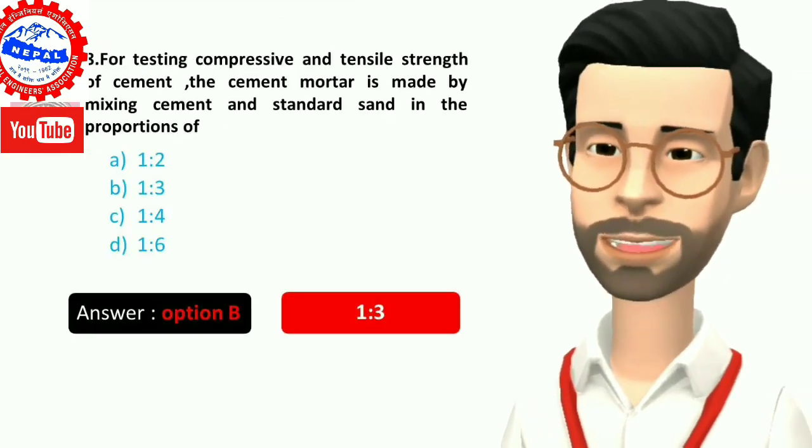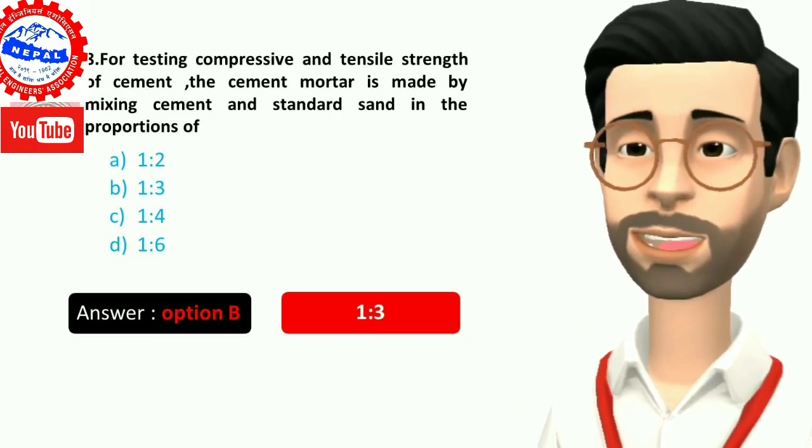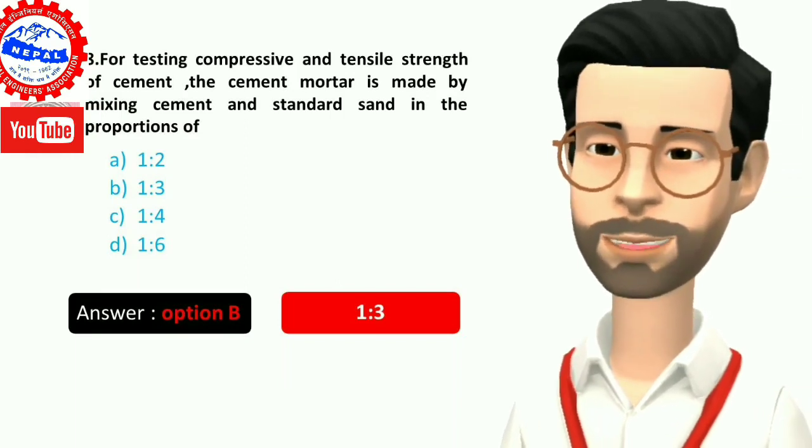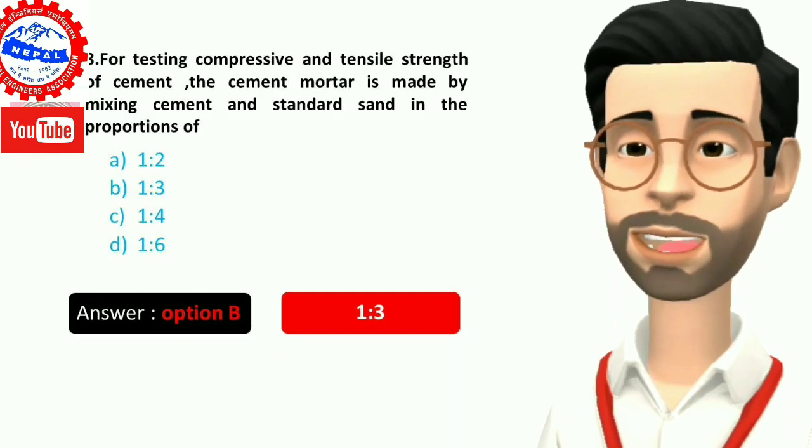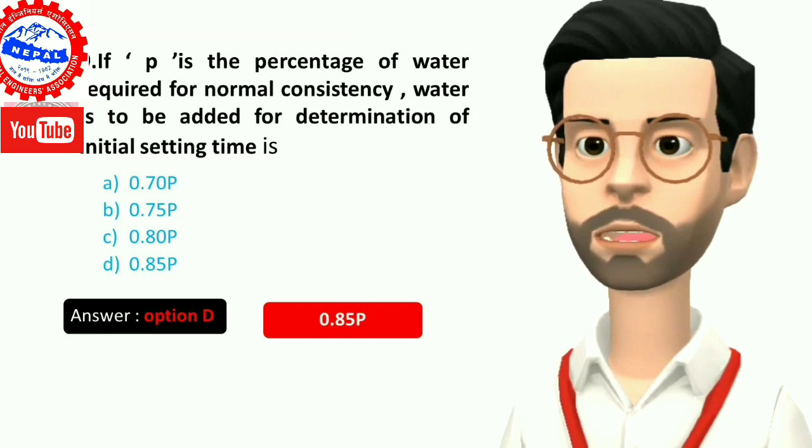Eight, for testing compressive and tensile strength of cement the cement mortar is made by mixing cement and standard sand in the proportions of: A) 1:2, B) 1:3, C) 1:4, D) 1:6. Answer is option B, 1:3.